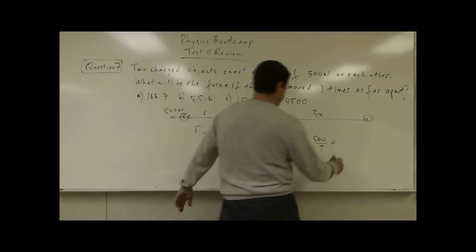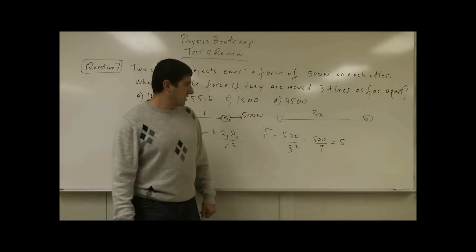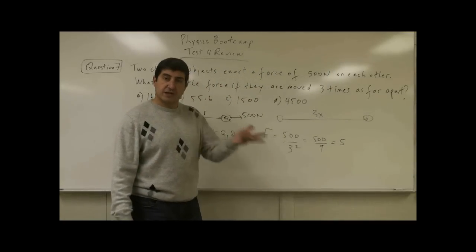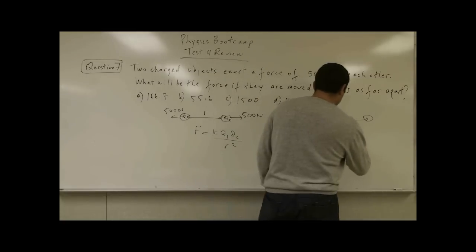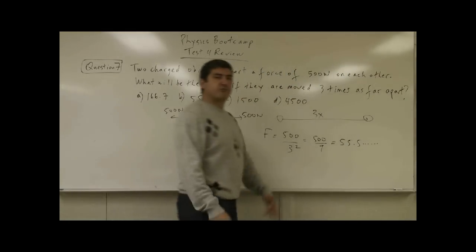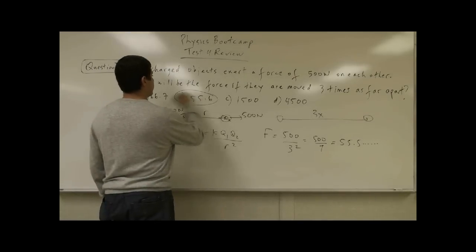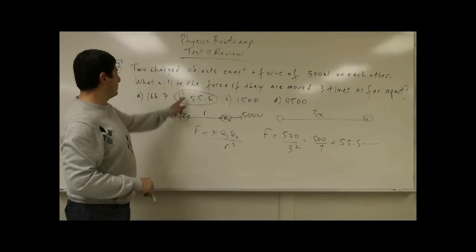Well, nine goes into 500 five times, with 45, and then it gives another 50, then five goes into 500 five times, and so on. 55.5 something something. So of course, this is the answer, 55.6 newtons B.